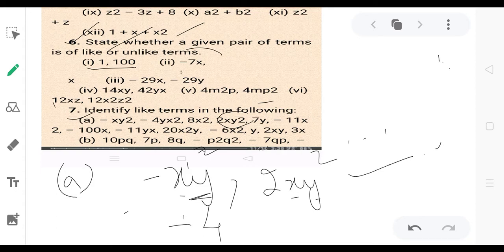Now we have -4yx², where x is power 2 and y is power 1. This is different from the xy² terms.